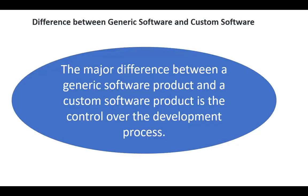The major difference between a generic software product and a custom software product is the control over the development process. In generic software, the company and its development team control the development process, while in custom software, the customer controls the development process in coordination with the development company. In addition, there are several other differences.